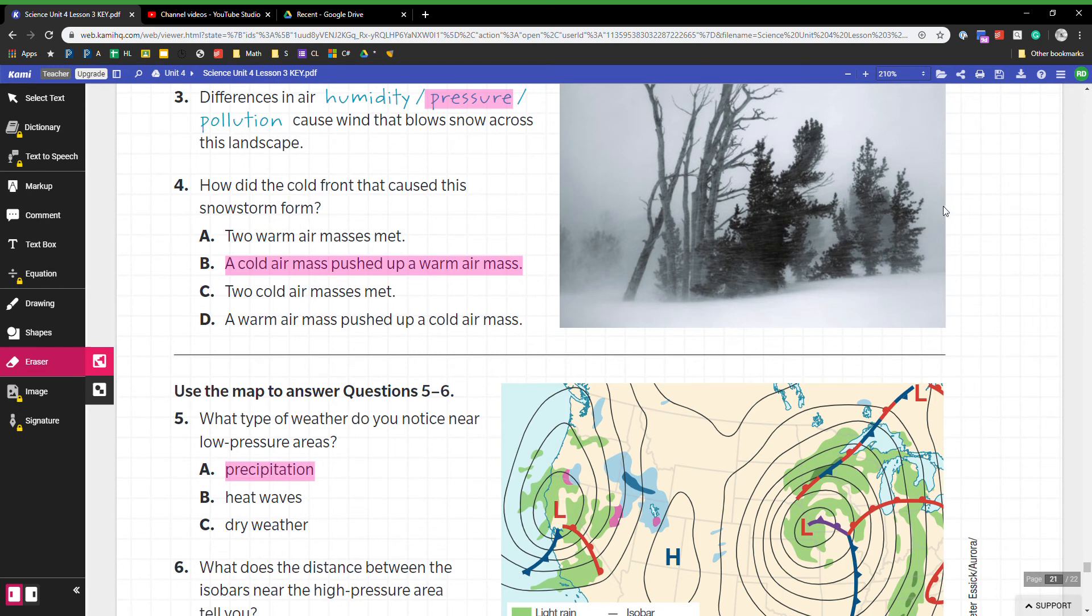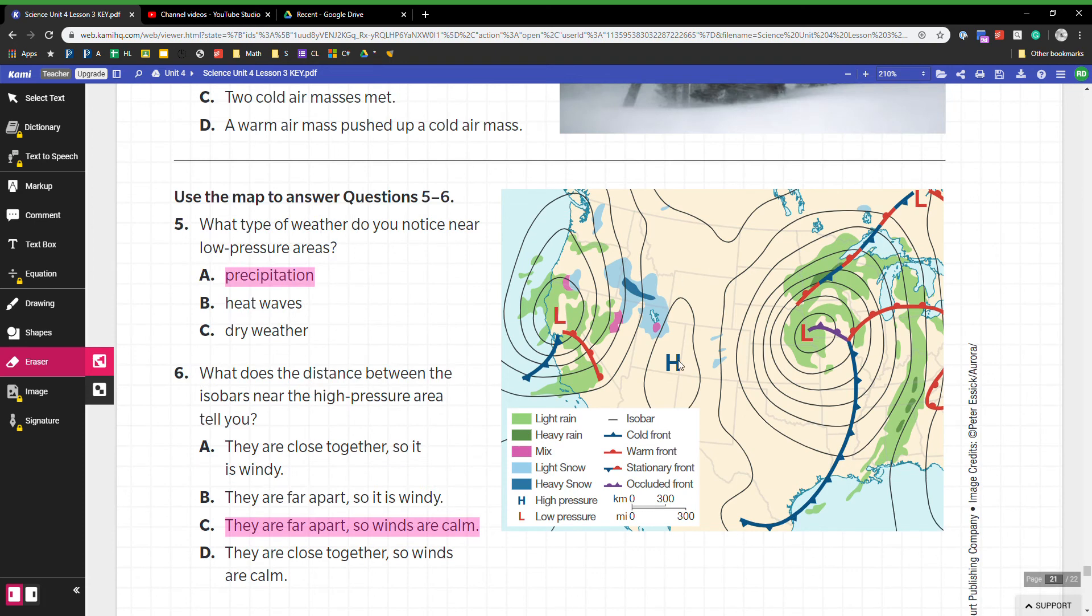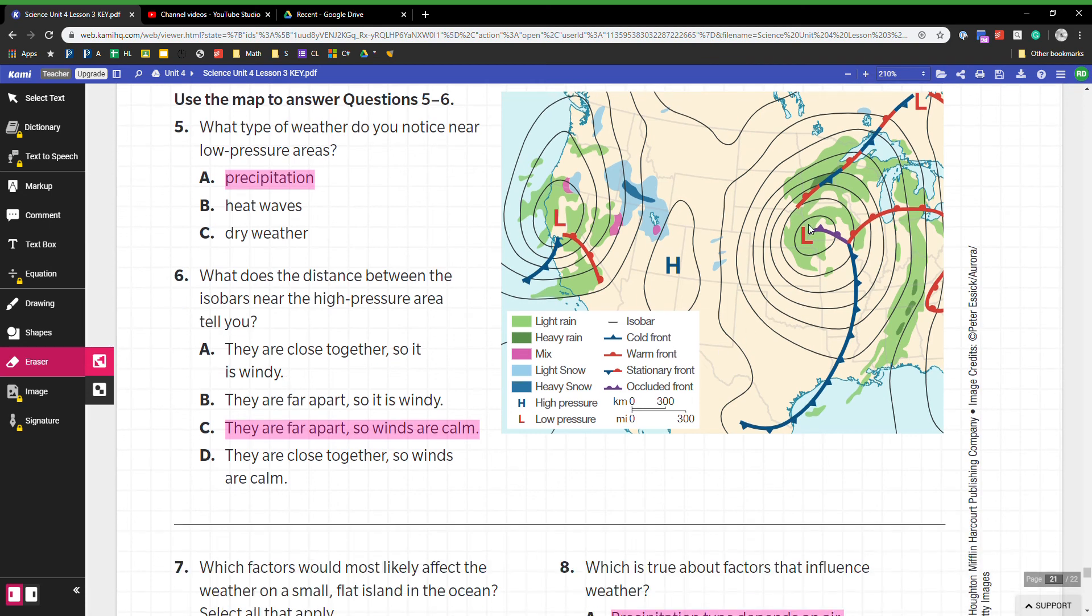Difference in pressure causes wind to blow across landscapes. Pressure is what causes wind. I would say that this storm's front was formed when a cold air mass pushed up warm air masses. What types of weather do we notice near low pressure areas? Precipitation—all these colors mean rain, rain, rain, rain and snow. So there's precipitation happening, there's not dry weather, it's not heat waves, it's not hot. The distance between the isobars near high pressure areas—see like these low pressure areas that are all really close together, all these isobars, the black circles.